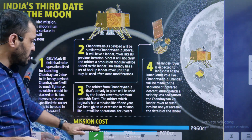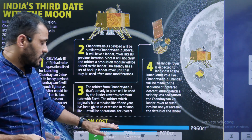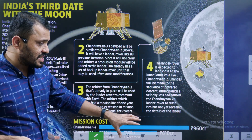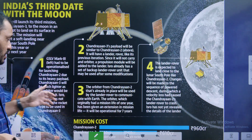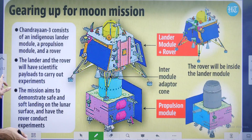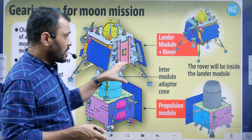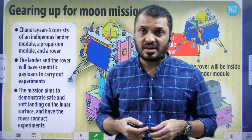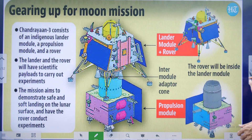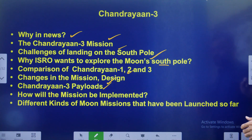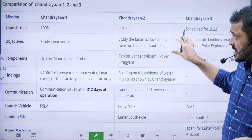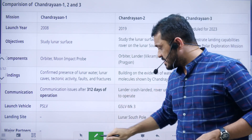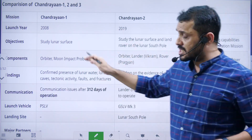Chandrayaan-3 was launched using the LVM3 — Launch Vehicle Mark 3. Compared to the cost of Chandrayaan-2, Chandrayaan-3 is less costly because it does not have an orbiter. The names of the Lander and Rover were not changed from Chandrayaan-2.